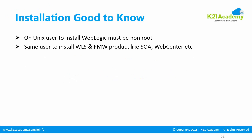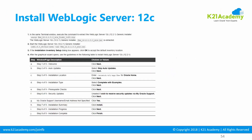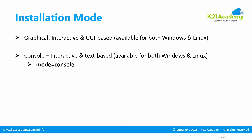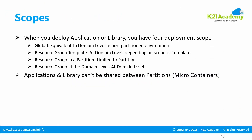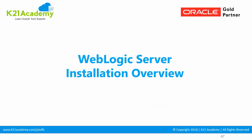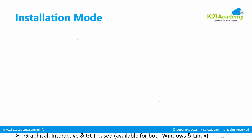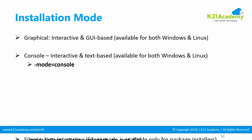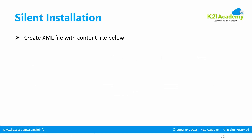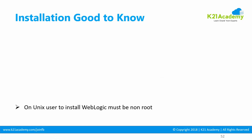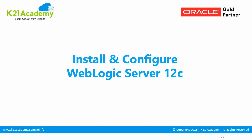That covers the WebLogic installation overview. In the next lesson, we'll look at how to install and configure WebLogic Server 12C. To recap this lesson: we looked at installation types — typical and custom — and installation modes: graphical, console, and silent. In silent mode, you create an XML file and pass it as an option. We also covered best practices to keep in mind.